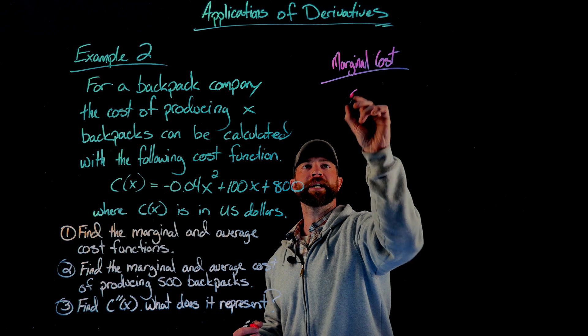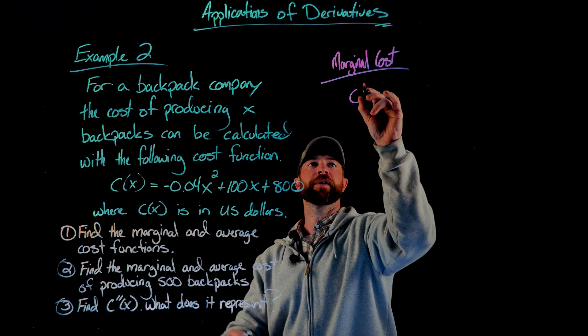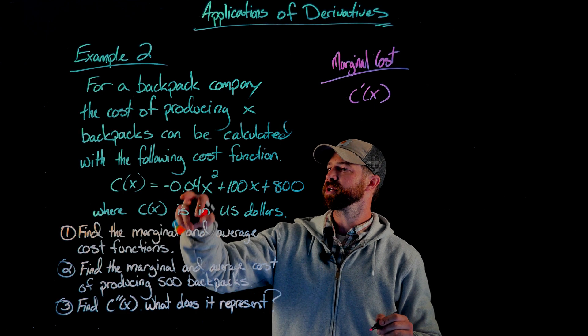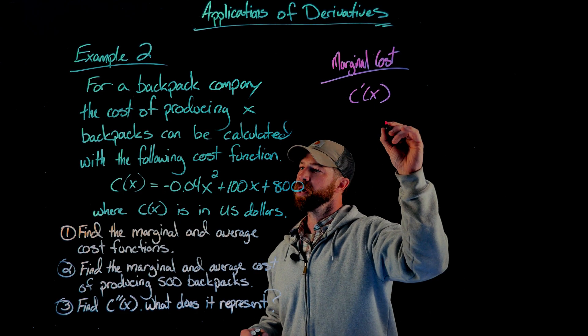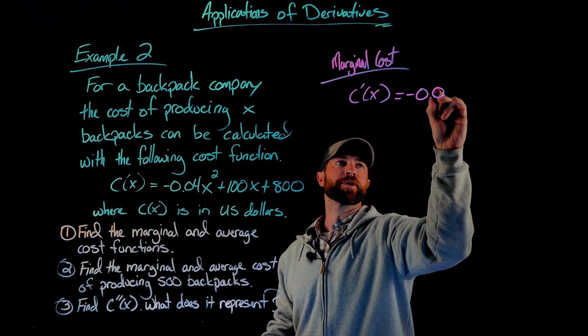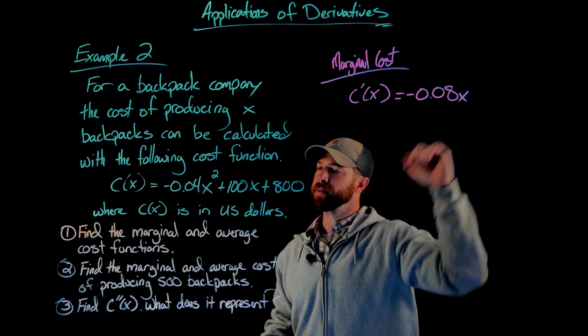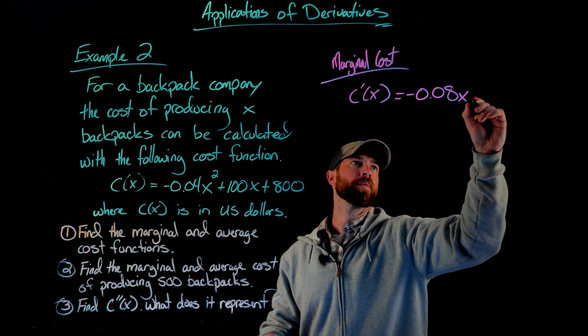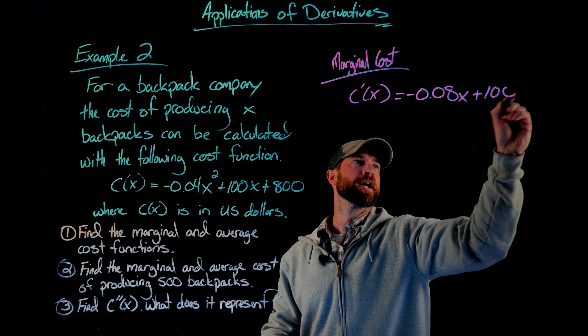In this case, the first derivative of this function, we can just use the power rule on each of these terms. This first term, I bring the two down and multiply it by this -0.04 to get -0.08 and then x to the 1 power now. And then the next term would be 100x, which when we take the derivative would just give us 100 there.